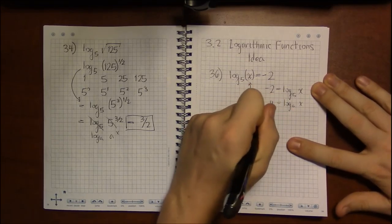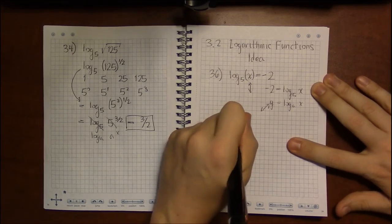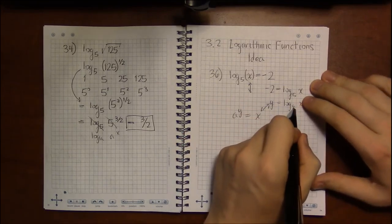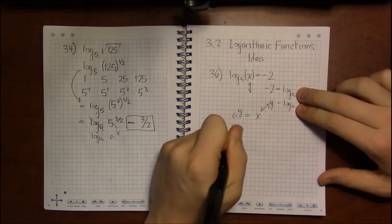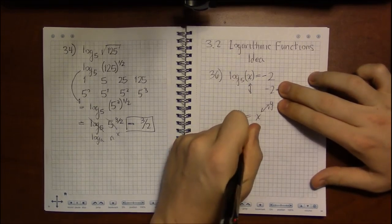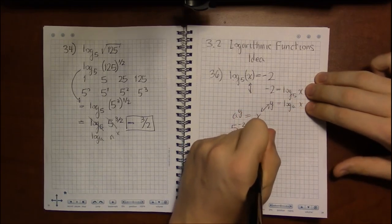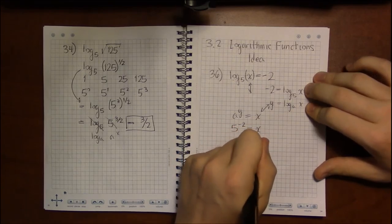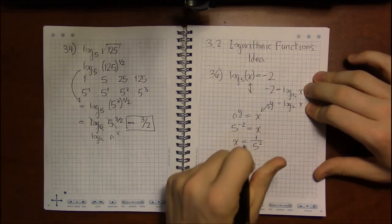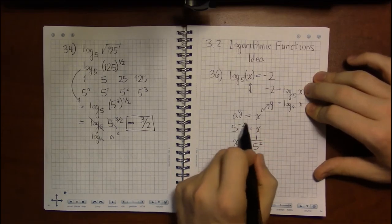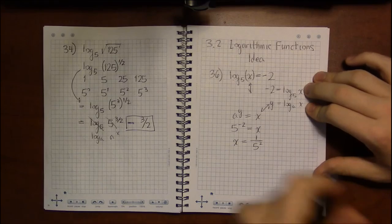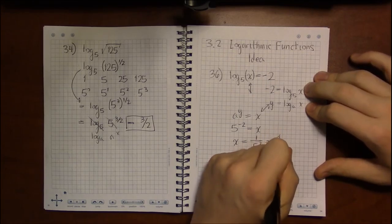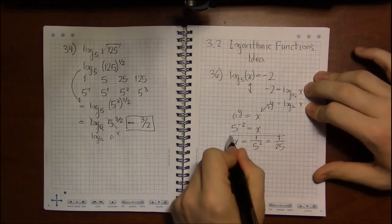So then this is going to flip to a to the y equals x. So in our case, a is 5, y is minus 2, and x is just x. So the solution to this is 5 to the negative 2. Which, in a more familiar format, we can move 5 squared to the denominator and change the sign of the exponent. And then 5 squared is 25. So the solution is 1 over 25.